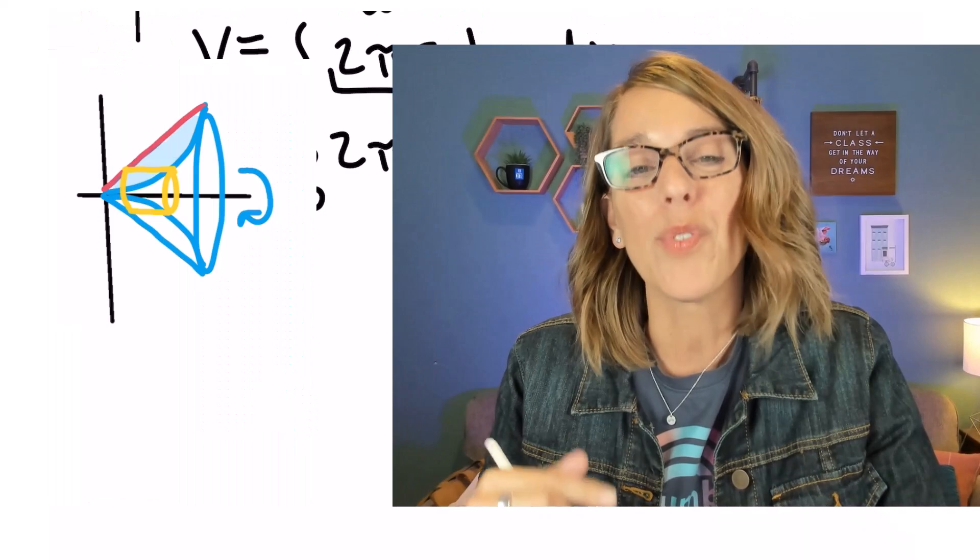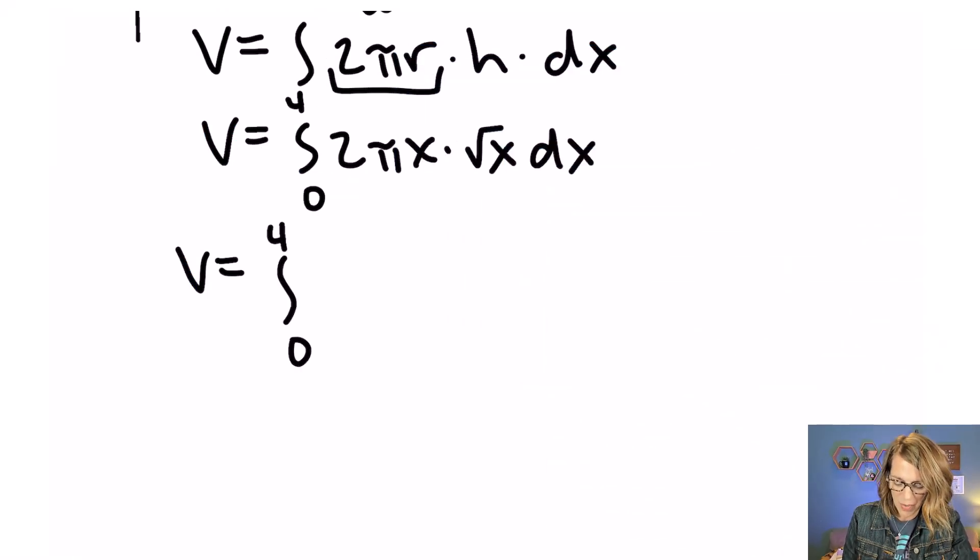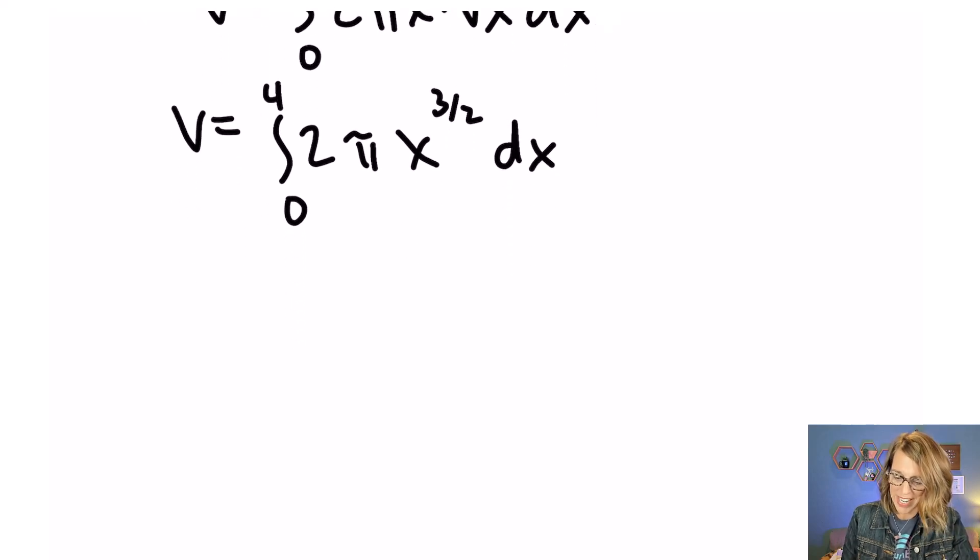I'm going to go ahead and do the integral and then we'll do one more example where we revolve around the x-axis instead. So continuing with this I've got 0 to 4. That 2π I can pull it on the outside. This is really a 1/2 power and the other x is a power of 1. So I can combine those by writing that as x^(3/2) dx. So this really works out pretty nicely.